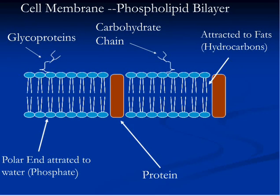The cell membrane also performs the function of a transport system. Transport of nutrients from blood across the cell membrane requires energy supplied by the cell — this transport is known as active transport. A cell must communicate with its environment and other cells to coordinate its functions, and this is done through signals received from the environment.